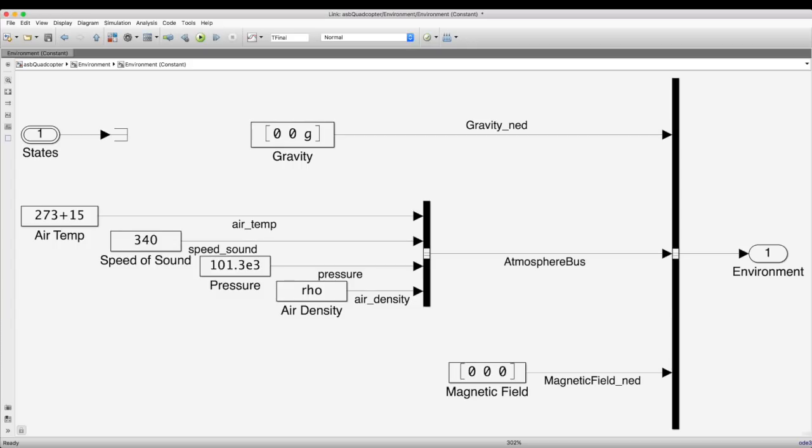However, if you wanted to simulate how high your mini-drone could fly, then selecting the changing environment will lower air pressure and air density as it gets higher, which will eventually stall the drone at some maximum altitude. So choosing one model or another depends on what you're trying to test for.